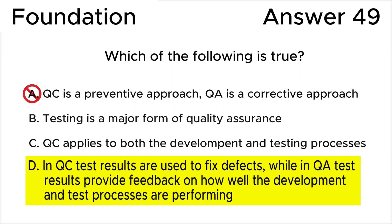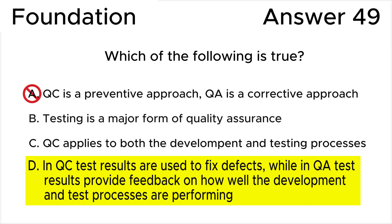Answer A is not accurate. Quality control is a corrective approach that involves identifying defects in the product after it has been developed. While quality assurance is a preventive approach that focuses on improving processes to avoid defects in the first place. QA involves activities like process audits, process definition, and training to prevent defects.